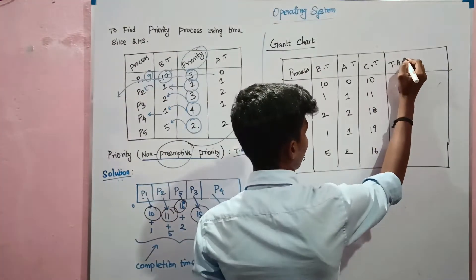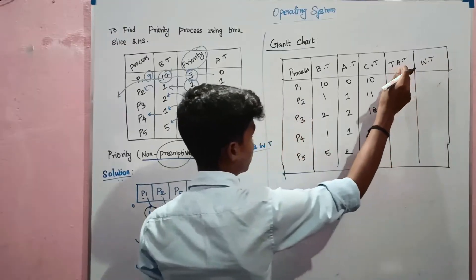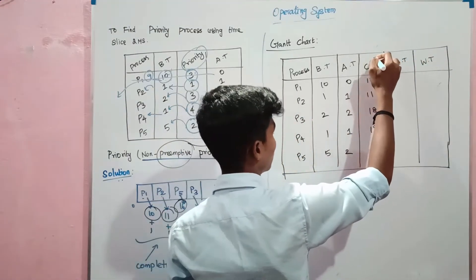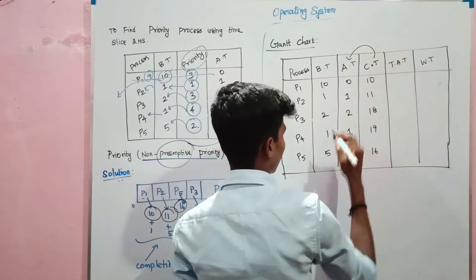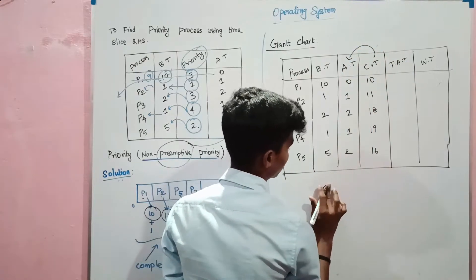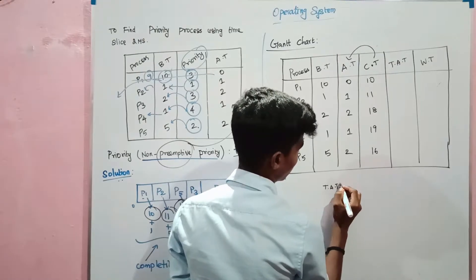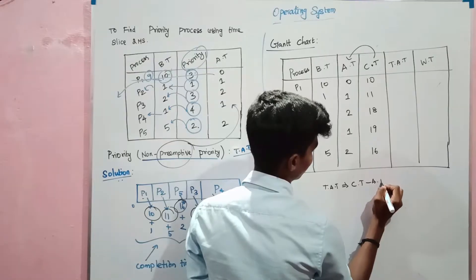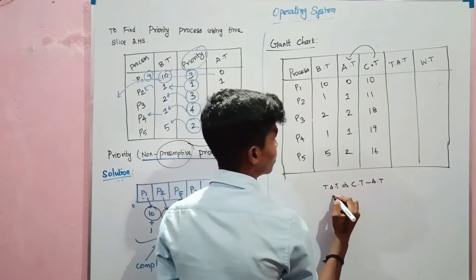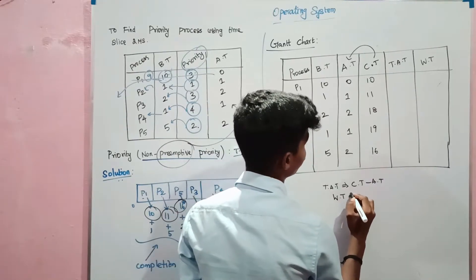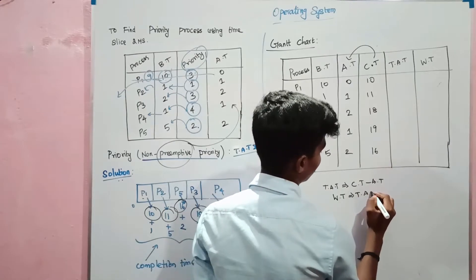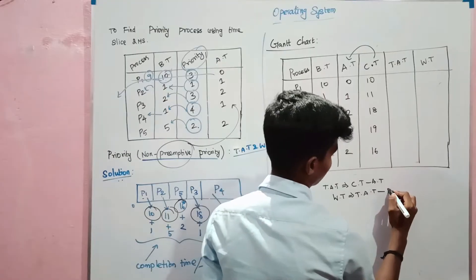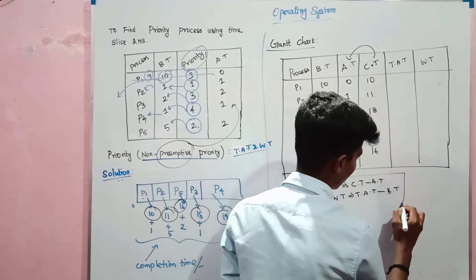Turn around time and waiting time — find out. The formula: turnaround time equals CT minus AT. And waiting time equals turnaround time minus burst time. 10 minus 10 equals 0. So, this is the formula.